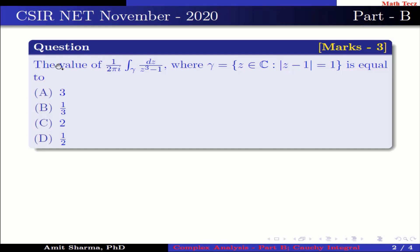The question is: the value of 1 upon 2 pi i, integration over gamma, dz divided by z cube minus 1, where gamma is equal to z belongs to C such that mod of z minus 1 equal to 1, is equal to...